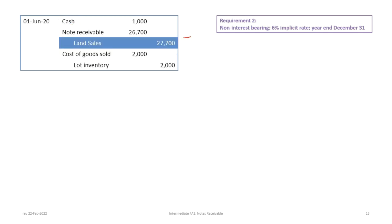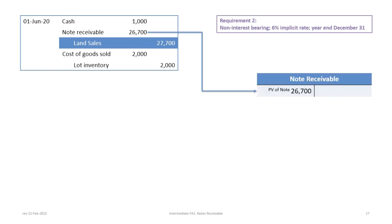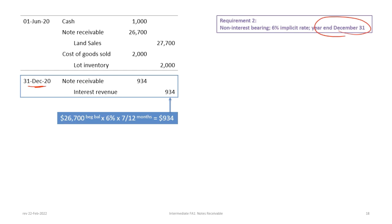Now that we have a note receivable extending beyond one year, it's a good idea to track it using a T-account. This first journal entry includes a debit to notes receivable of $26,700. At December 31st (the revised year-end in this example), we also have to accrue interest. We take the balance in the note receivable account — $26,700 — and multiply by 6%, giving annual interest of $1,602. Prorating by 7 over 12 months (June through December inclusive, seven complete months), the result is $934 in accrued interest.